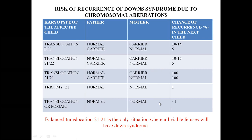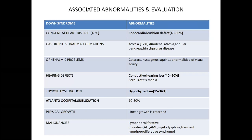Investigations for Down syndrome: two sets — to confirm diagnosis and to assess complications. To confirm: karyotyping of the child is a must; if translocation, karyotype parents to identify carriers and determine future risk. Complications workup: peripheral smear and CBC for leukemia; X-ray spine at age 3–5 years for atlantoaxial dislocation; X-ray chest for heart size and rib abnormalities; X-ray bones for delayed epiphyseal maturation; X-ray pelvis for hip dislocation; ECHO and ECG to rule out congenital heart disease; thyroid function tests to rule out hypothyroidism.